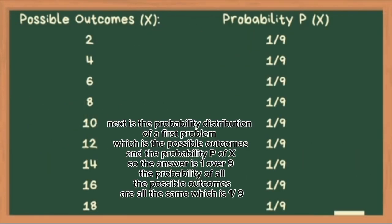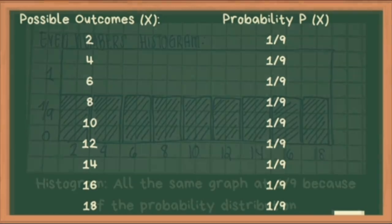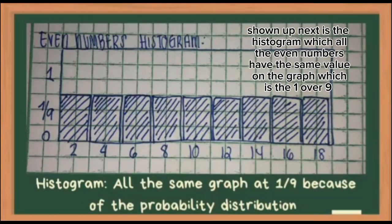Next is the probability distribution of the first problem, which shows the possible outcomes and the probability P of X. The answer is 1 over 9. The probability of all possible outcomes are all the same, which is 1/9. Shown next is the histogram, where all the even numbers have the same value on the graph, which is 1 over 9.